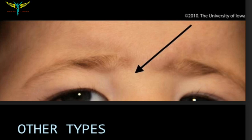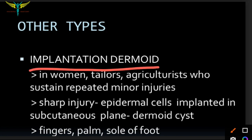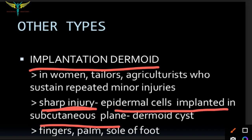This picture shows the medial nasal dermoid. There are other types of dermoid called implantation dermoids. These are seen mostly in women, tailors, and agriculturists who sustain repeated minor injuries. They are usually caused by a sharp injury, where epidermal cells are implanted into the subcutaneous plane and form a dermoid cyst.